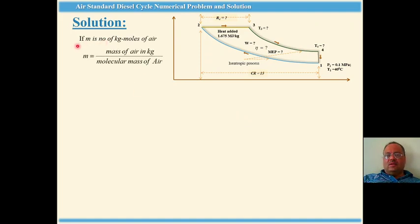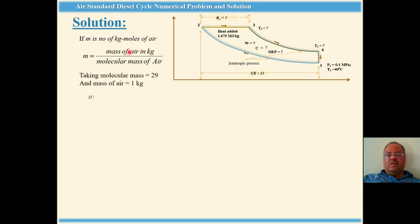Let m be the number of kg-moles of air, which is the mass of air divided by molecular mass of air. How do we calculate the kg-mole? The molecular mass of air is 29 kg per kg-mole, so m equals 1 upon 29 kg-mole for 1 kg of air.